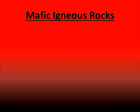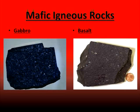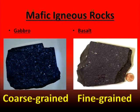Two examples of mafic igneous rocks would include the rocks gabbro and basalt. I like to use these two as examples because they both represent the dark-colored nature of mafic igneous rocks, but also show that with mafic rocks we can also divide them down based on whether they are coarse-grained or fine-grained. The mineral grains in gabbro can be seen — you can see individual crystals inside of it. Whereas with basalt, the mineral grains are much smaller. So a description of gabbro would be that it is a coarse-grained, mafic, igneous rock. And a description of basalt would be that it is a fine-grained, mafic, igneous rock.